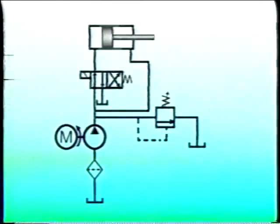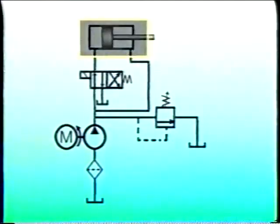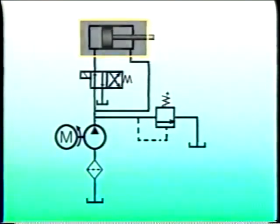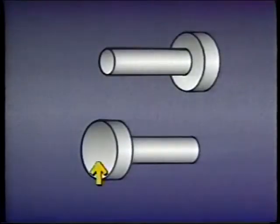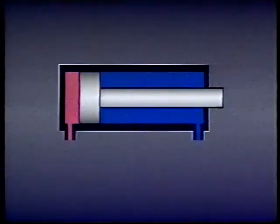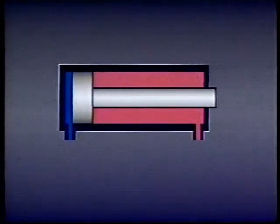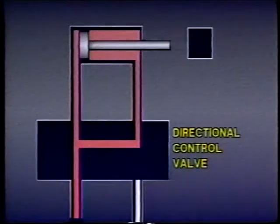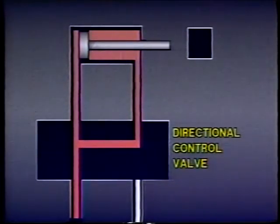Another way to match the velocity of rod extension and retraction is to use a two-to-one cylinder in a regenerative circuit. In a two-to-one cylinder, the area of the piston at the cap end is twice the area at the rod end. If flow on extension were equal to flow on retraction, the rod would extend slower than it retracted because there is more volume to be filled on the cap side. However, when used in a regenerative circuit, fluid from the rod end is discharged back into the cap end, increasing the total flow and equalizing the speed.